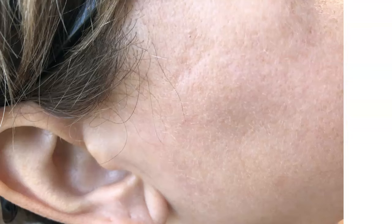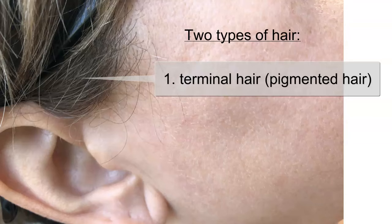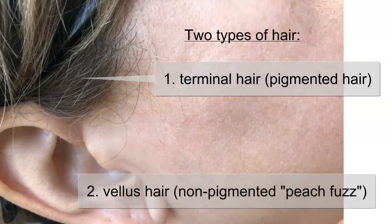In this picture you can see two types of hair, both having the same three regions: the medulla, the cortex, and the cuticle. The pigmented hair we would typically refer to as hair is called terminal hair — that would be the hair on the head, eyebrows, eyelashes, etc. Then there's non-pigmented hair, like the hair you can see on the surface of the face — that's called vellus hair.